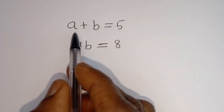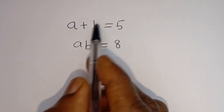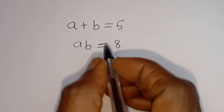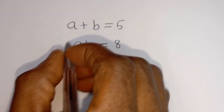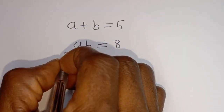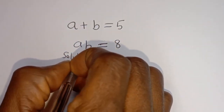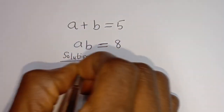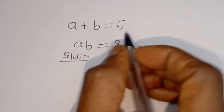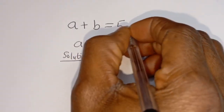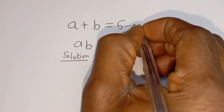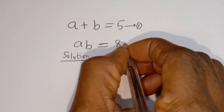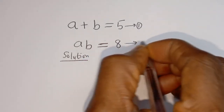Hello. How to solve for A and B in this equation: A plus B is equal to 5, and AB is equal to 8. Solution.